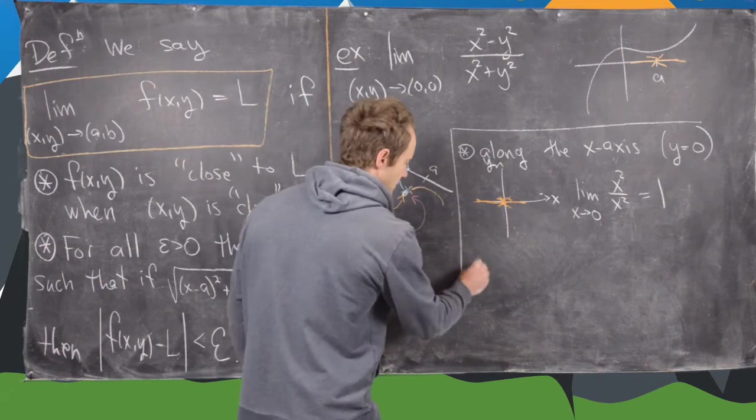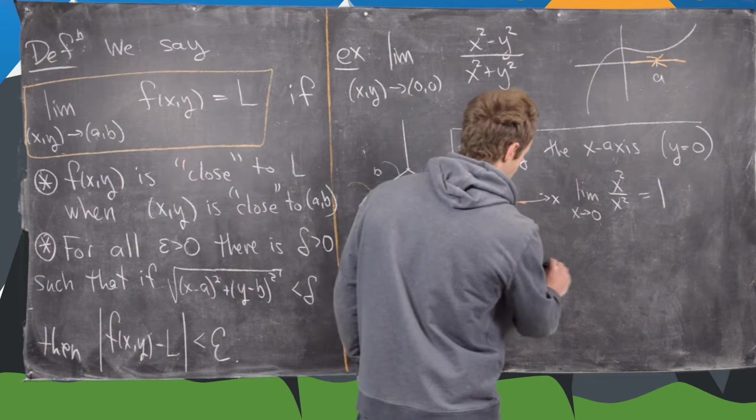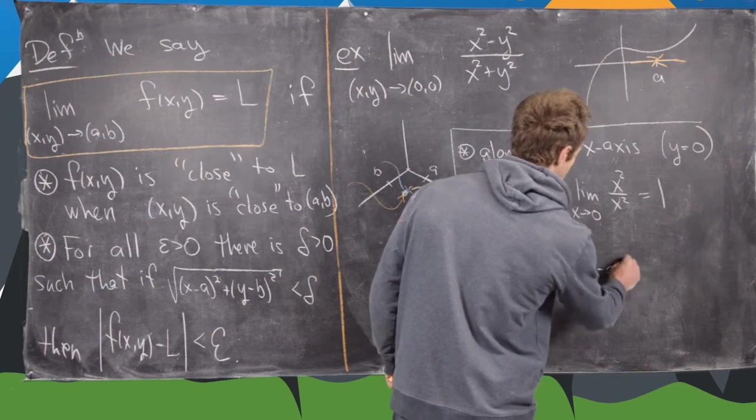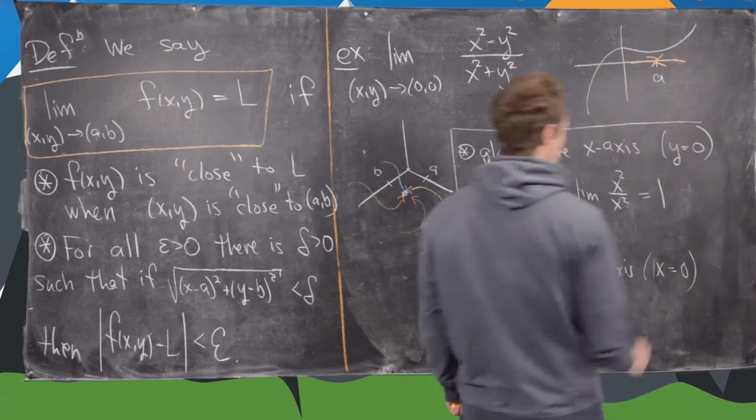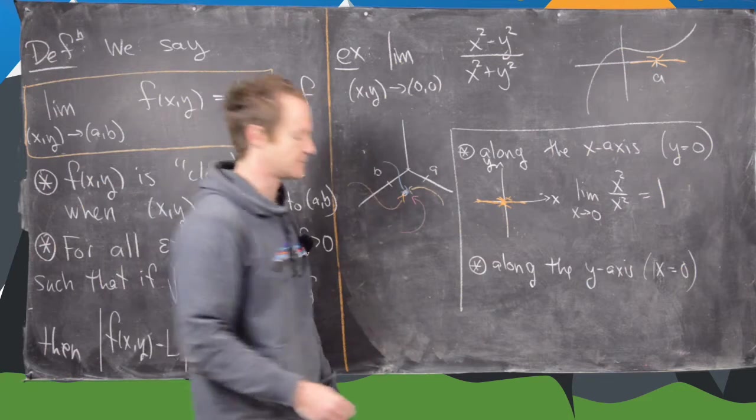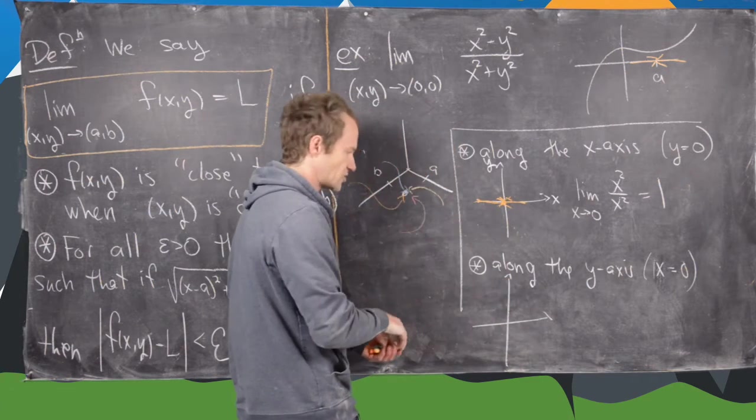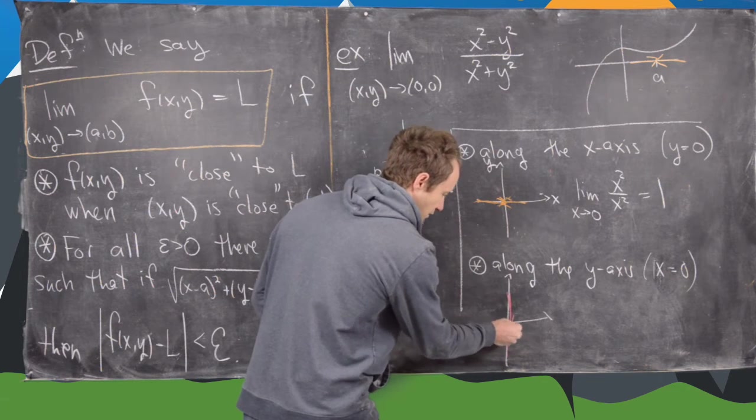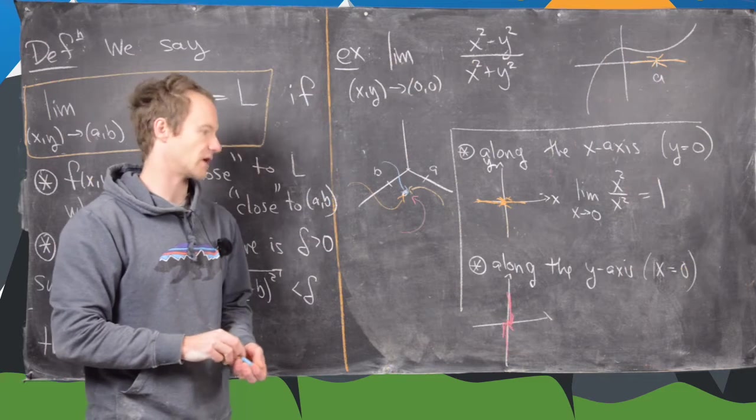Notice these y's disappeared. Now the next thing that we want to do is calculate the limit along the y axis. Recall that the y axis is given by the equation x equals zero. So here we're coming along the vertical axis, approaching the limiting point from those two directions.